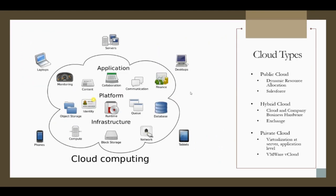I wanted to talk about the different types of clouds available. If you think about cloud as an architecture, it has a clear differentiation of layers: the bottom infrastructure layer, a middle platform layer, and the top application layer. Different cloud providers offer individual services — you can use infrastructure as a service, platform as a service, or SaaS, which is application as a service. With hardware becoming cheap, it's easy to put these things together and offer cloud computing power to all users.